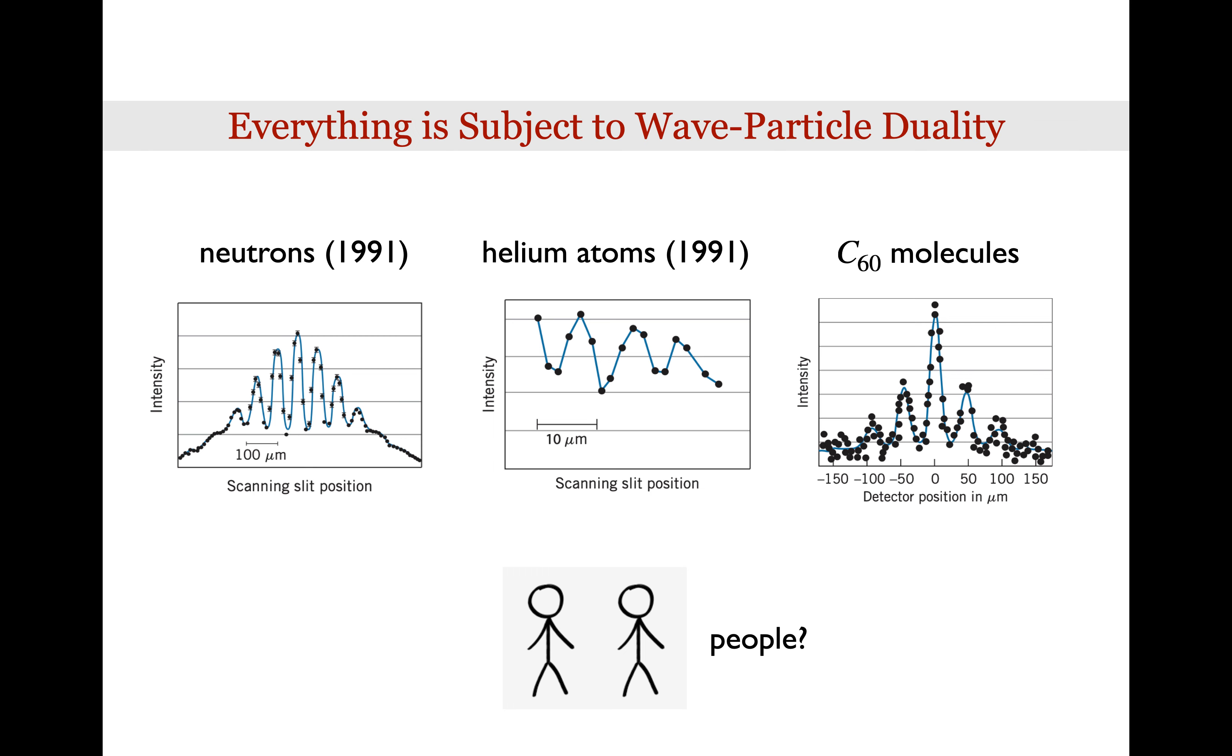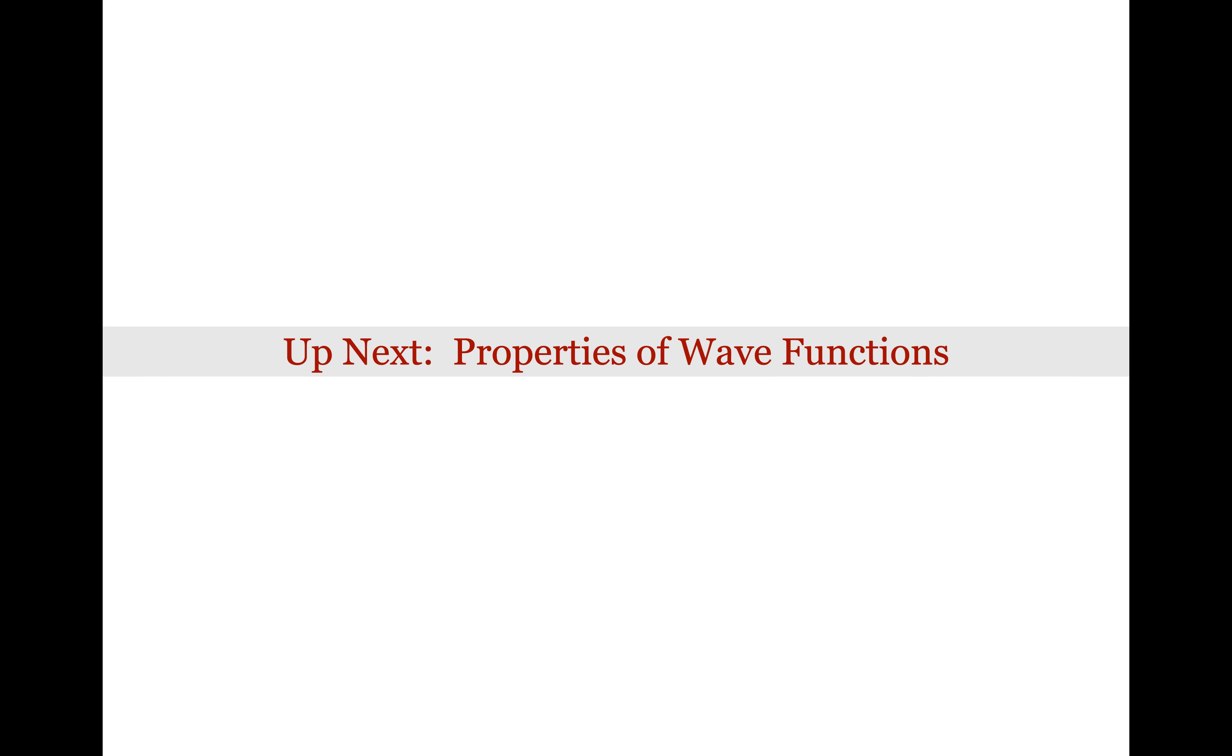One could, of course, extrapolate this to macroscopic objects and ask what it would mean for a macroscopic object, such as people, to exhibit a wave-like nature. All right, up next, properties of wave functions.